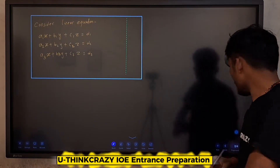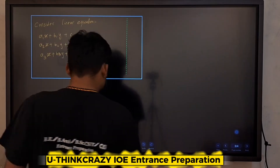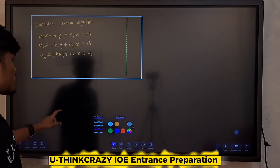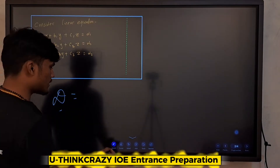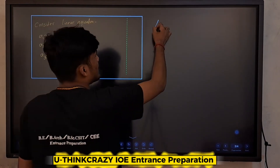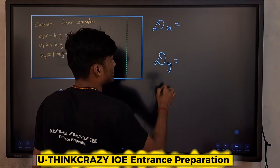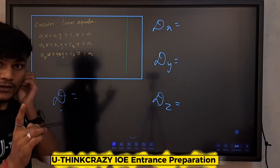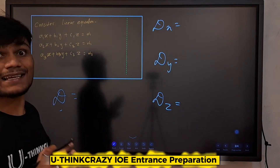I will tell you the question first — what we will do. First, D is D. Then Dx, then Dy, then Dz. Then I will tell you the matrix of the determinants.